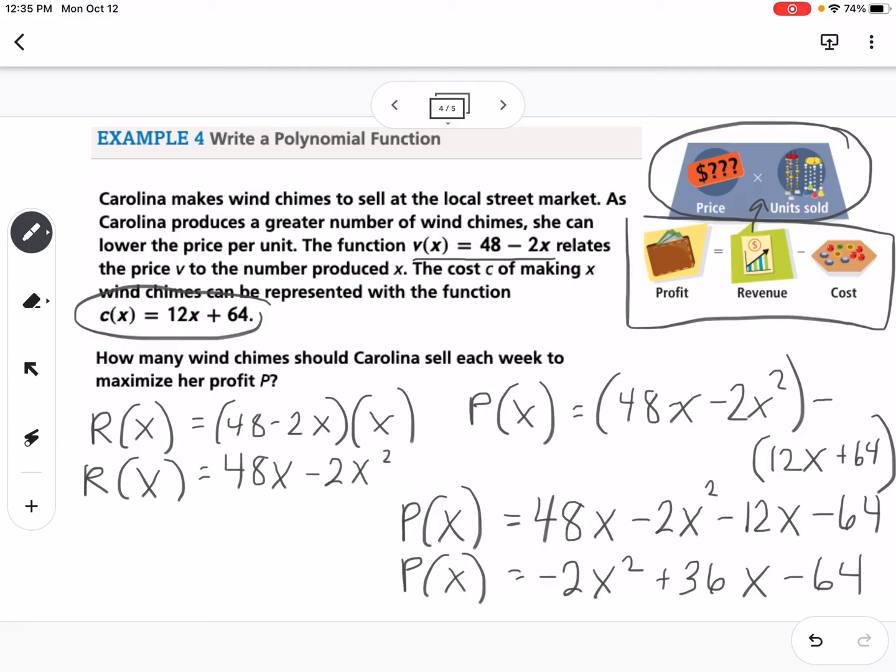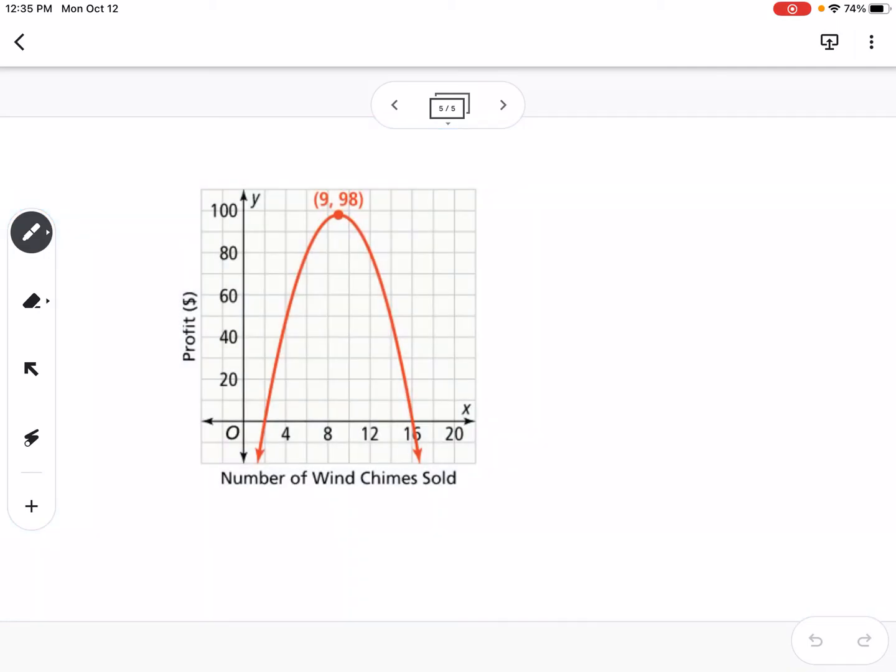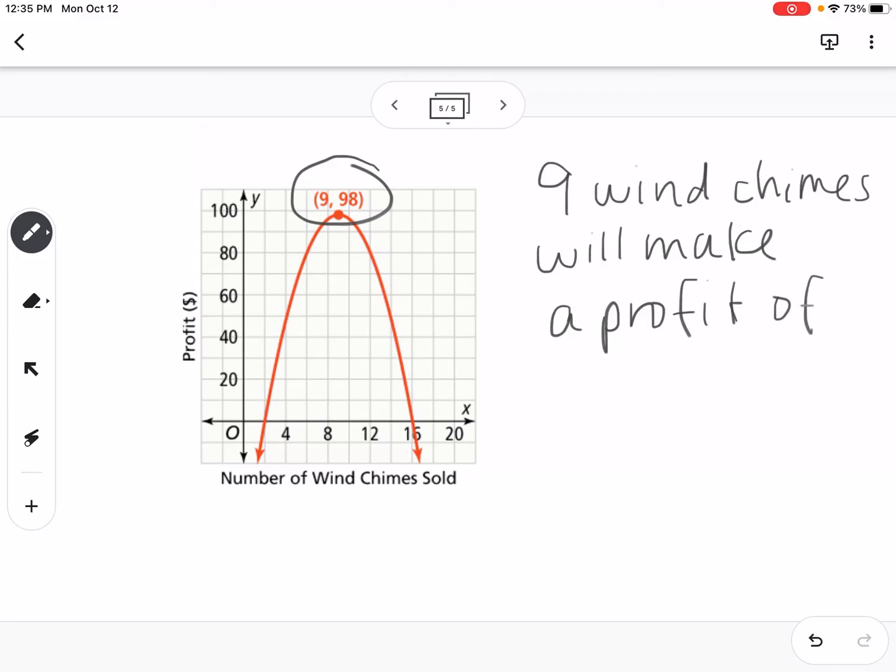So now I have a quadratic function, and we want to maximize her profit. So we want to figure out how many units she needs to sell to maximize her profit. So we can graph this. So you could take this equation right here, and you could put it into Desmos and graph and find the maximum. So in the next slide, I have it graphed for us. So this maximum value tells us that she needs to sell 9 wind chimes, and that will make a profit of $98 each week.